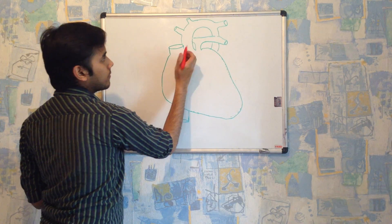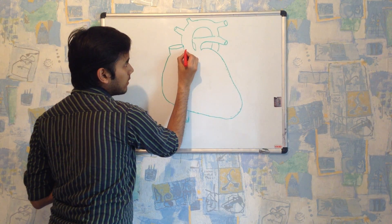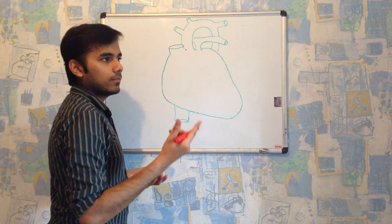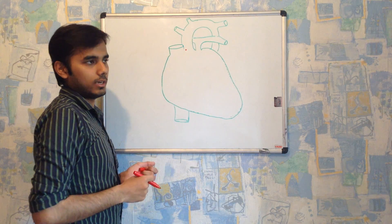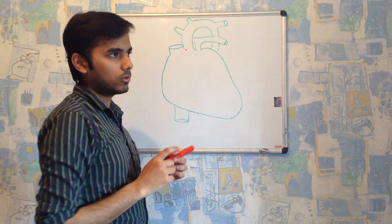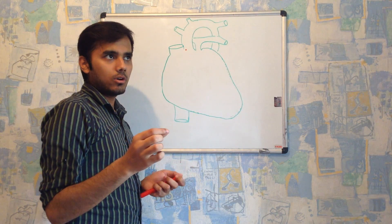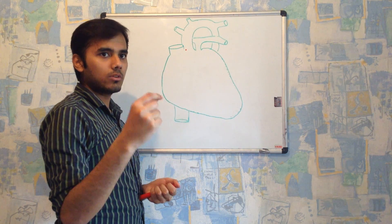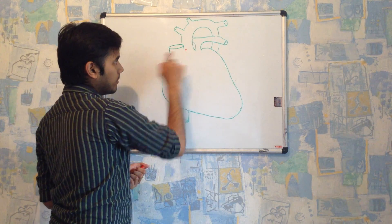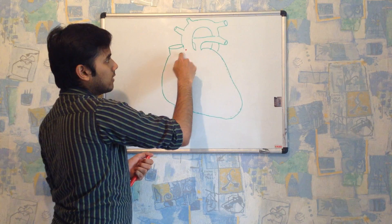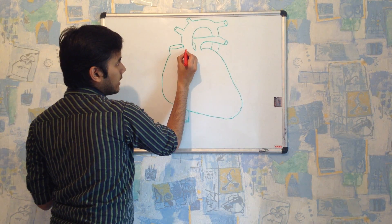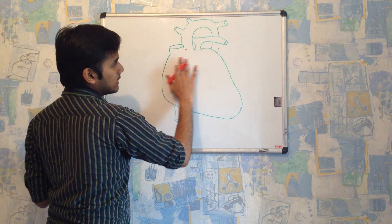From the base of the arch of aorta there is an origin of one of the arteries of the heart — it is called the right coronary artery. The right coronary artery originates from the base of the arch of aorta. One important thing: this is the anterior surface of the heart.